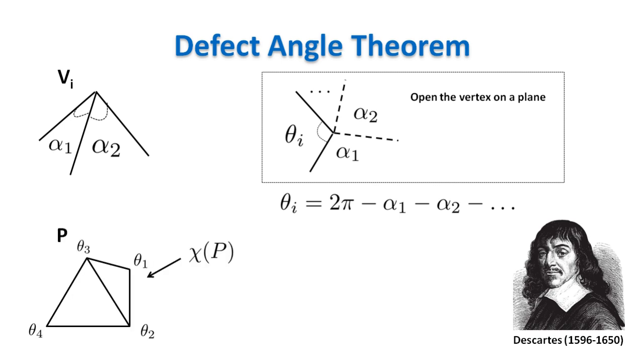The defect angle theorem states that, given a polyhedral surface with Euler characteristic chi, the sum of the defect angles at all vertices is equal to 2 pi chi.